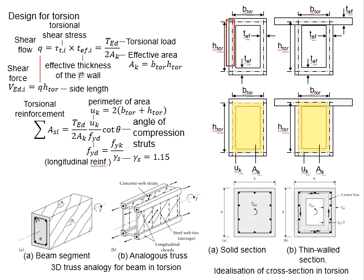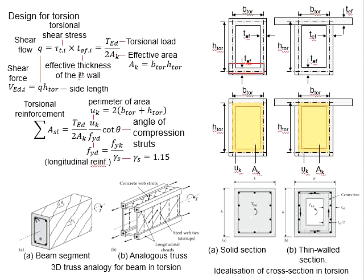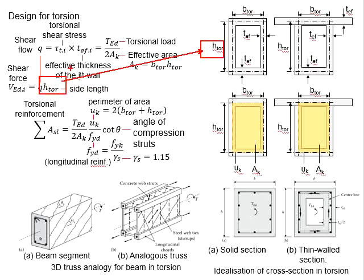Taking this as an example, the H_torsion for this part will be this H_torsion. However, if we are referring to this other element, the H_torsion will be referred to this length. Therefore, it is not to be confused — H_torsion is always referring to the side length of the member, not a fixed dimension.